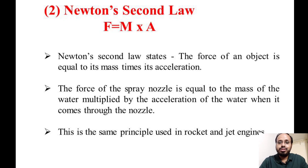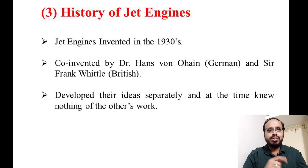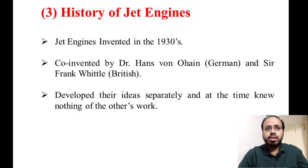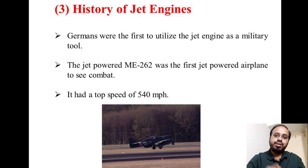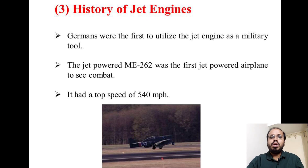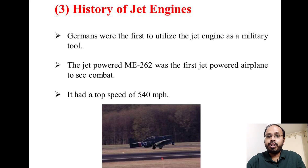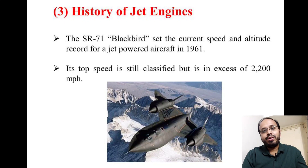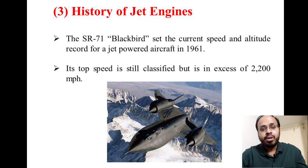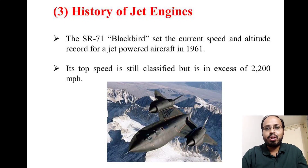The third point is the history of the jet engine. The jet engine was invented in the 1930s. Dr. Hans von Ohain and Sir Frank Whittle developed their ideas separately and at the time knew nothing of each other's work. The Germans were the first to utilize the jet engine as a military tool — the jet-powered Me-262 was the first jet-powered airplane to see combat, with a top speed of 540 miles per hour. The SR-71 Blackbird set the current speed and altitude record for jet-powered flight; its top speed is classified but is in excess of 2,200 miles per hour.